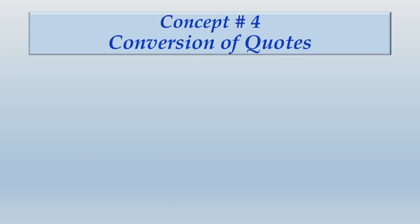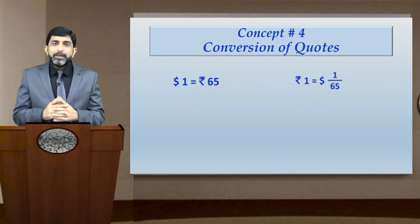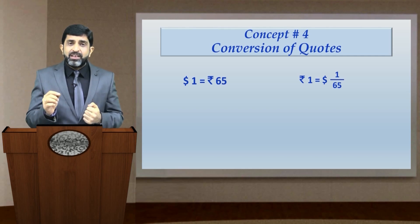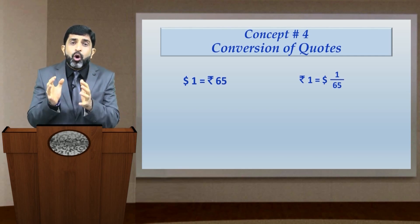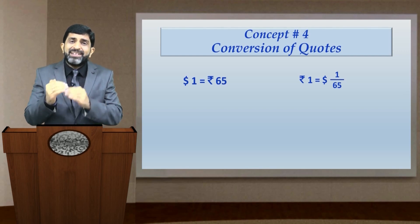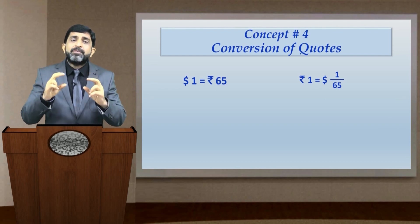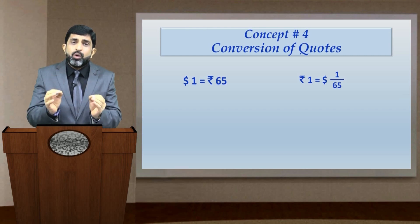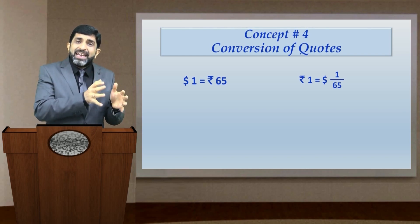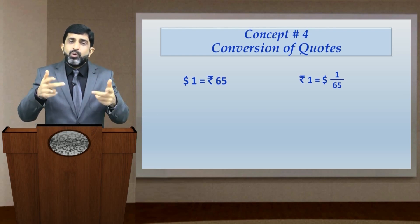Let us move ahead and talk about the conversion of quotes — converting a direct quote into an indirect quote and vice versa. If dollar 1 equals rupee 65, then rupee 1 will equal dollar 1/65. For an entity in India, the first rate is a direct quote because it is a quote of one unit of foreign currency in terms of local currency. To convert a direct quote into an indirect quote, we simply take the inverse of the rates. Taking the inverse of rates of a direct quote gives you the indirect quote and vice versa.